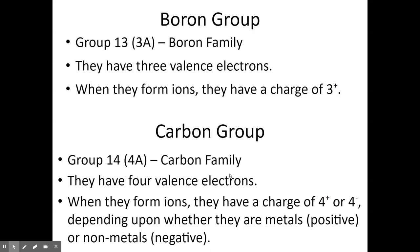Groups 13 through 16 are typically named after the element at the top of the group. Group 13 is the boron group, with 3 valence electrons — most are metals that form a +3 cation, while boron is a metalloid that tends to covalently bond rather than ionize. Group 14 is the carbon family, with 4 valence electrons. They can form either a +4 or −4 charge if they ionize, and many elements in this group prefer covalent bonding.